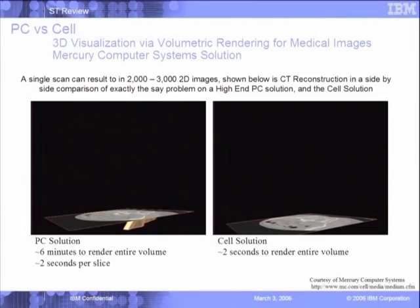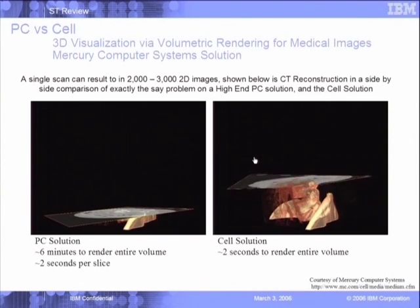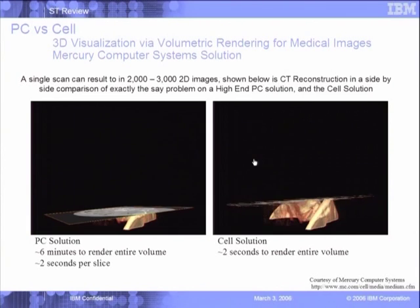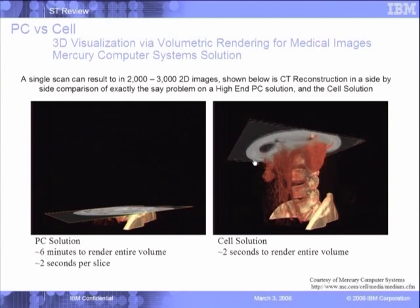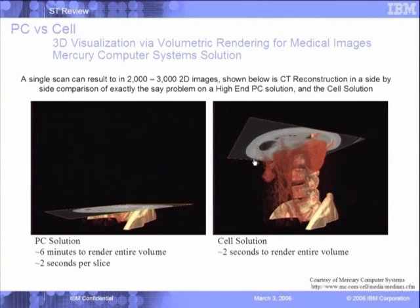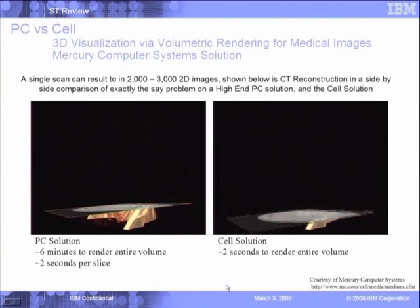The other demo we have is on medical imaging — a comparison of a Cell solution versus a PC solution. This is the way the PC is rendering and reproducing the data, and that's the speed of the Cell processor. You can see that this PC solution takes two seconds per slice, six minutes to render the entire volume, whereas the Cell just took two seconds to do the whole thing. This was also demoed at our conference in Germany, and we got pretty good feedback. So that's another demonstrated workload.